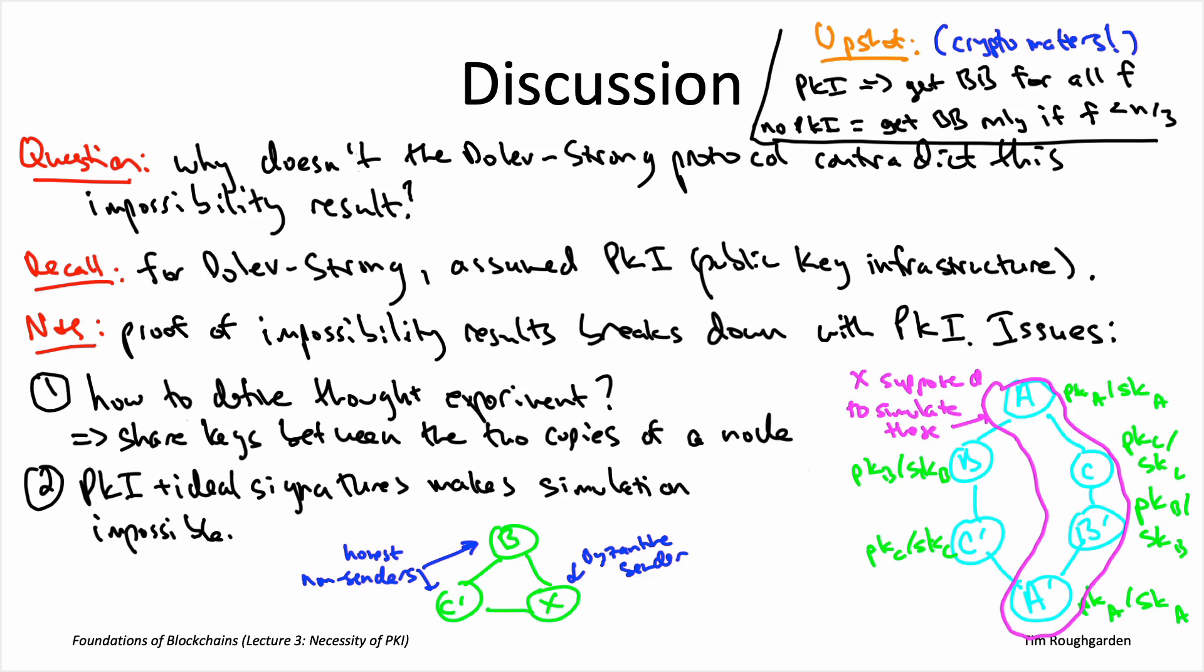So just as a point of contrast, think about when you study algorithms, right? It doesn't matter whether cryptography exists or not. You're trying to solve the minimum spanning tree problem. Who cares if there are secure digital signature schemes? You just give the algorithm. Or maybe it's a hard problem, like an NP-hard problem like the traveling salesman problem. And it doesn't help you if I give you for free a secure digital signature scheme, right? It doesn't let you solve the problem any better than you could before.